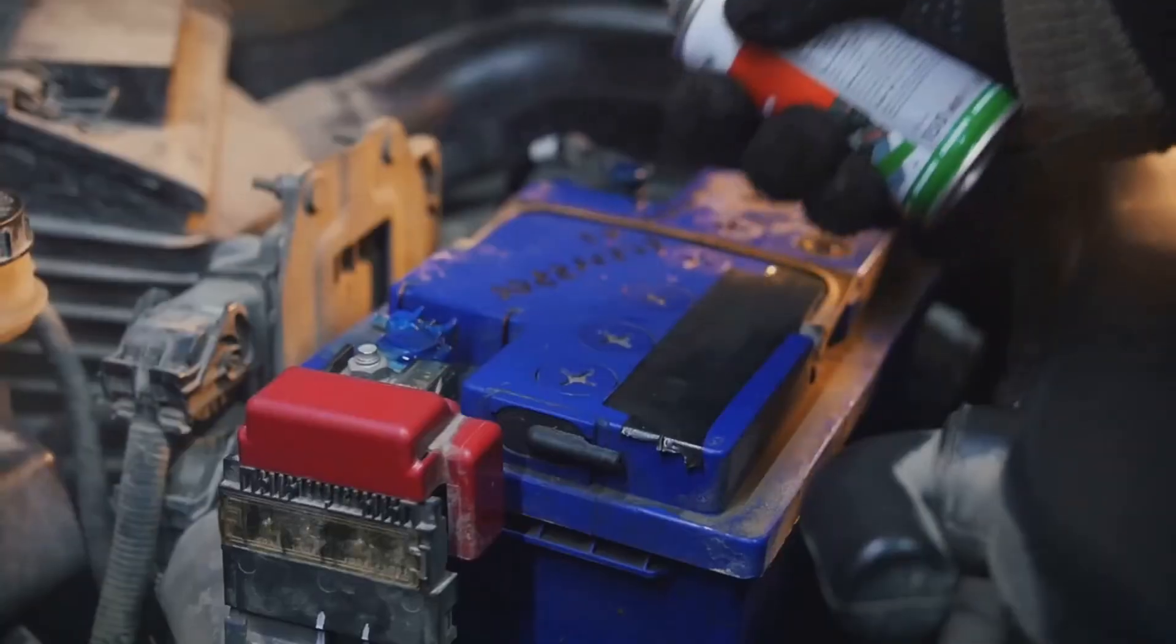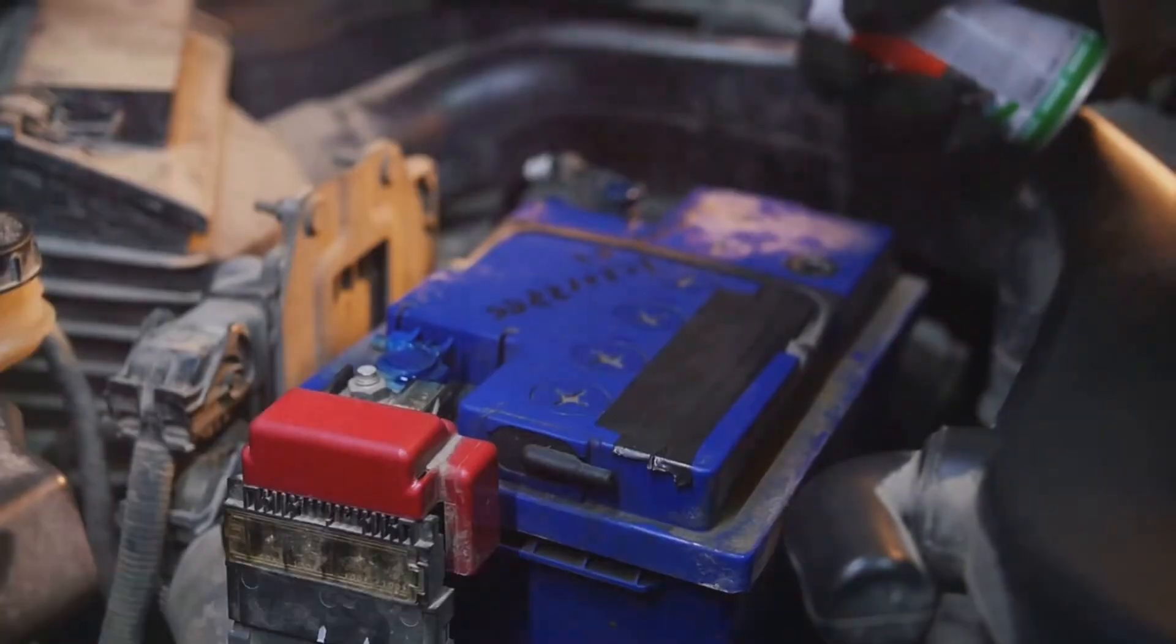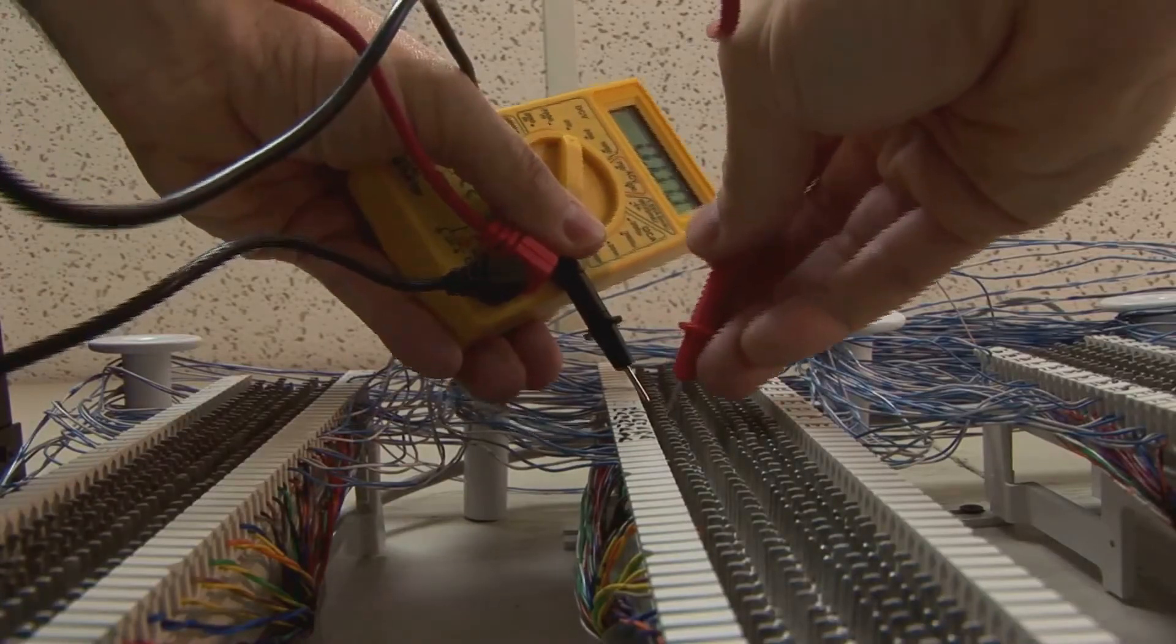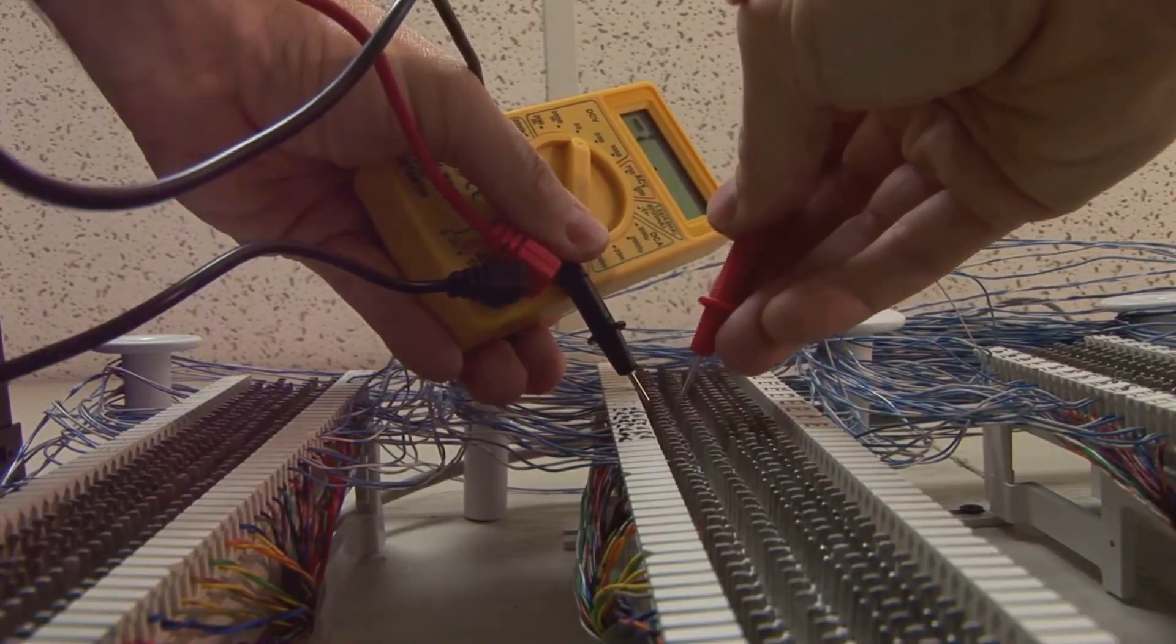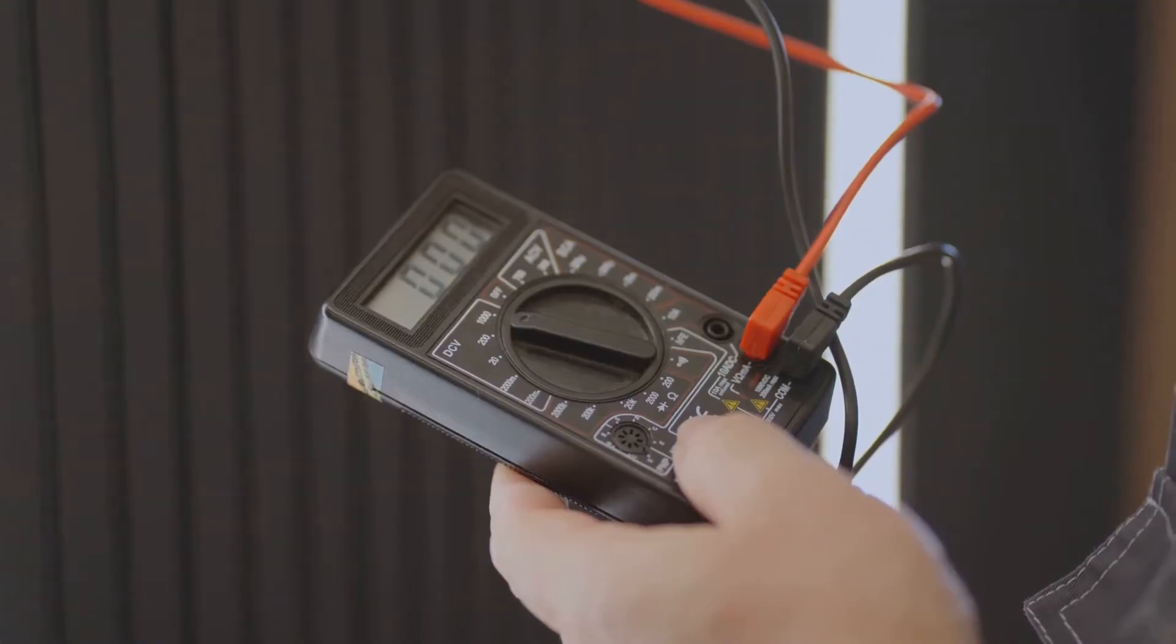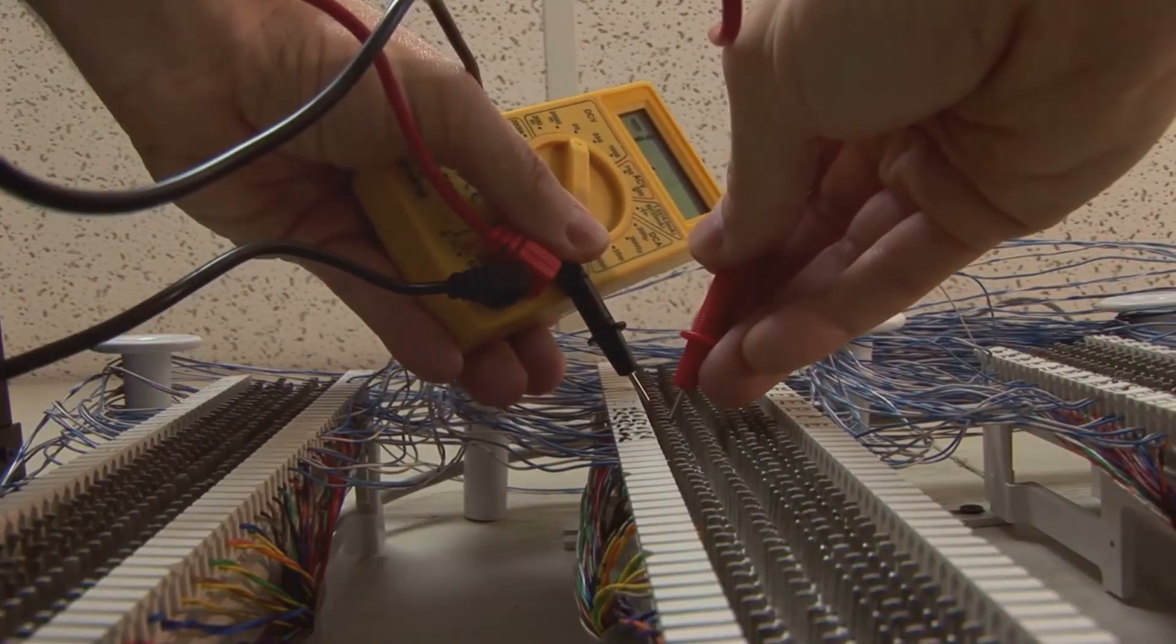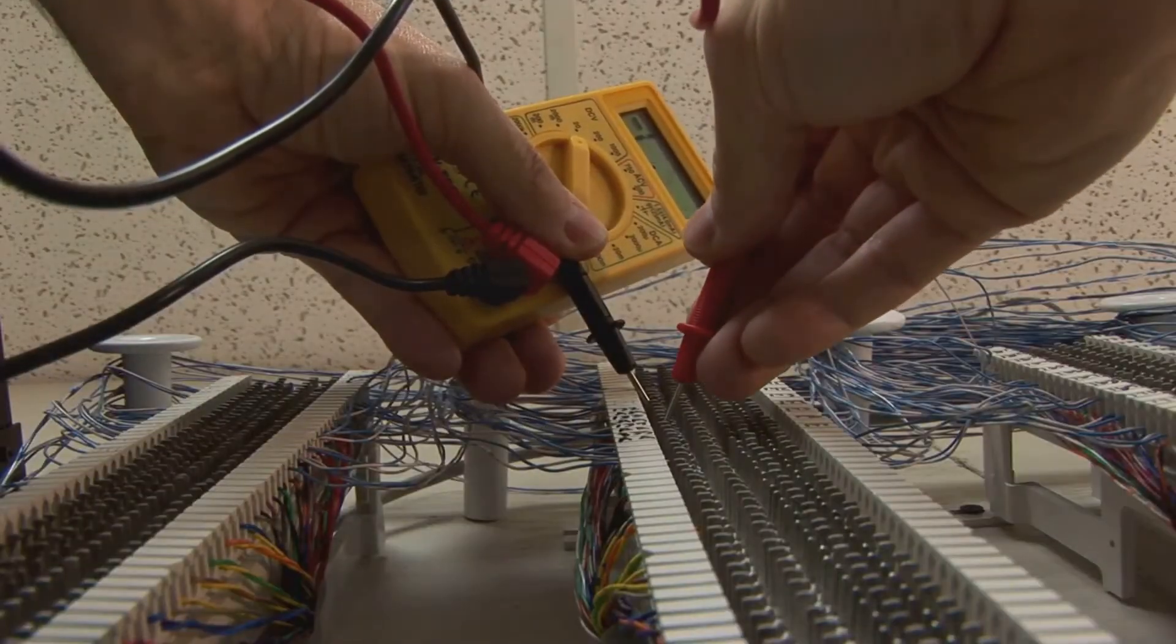Try cleaning the terminals with some sandpaper or electrical contact cleaner. Sometimes the problem isn't the coil itself, but the plunger sticking. Try gently tapping the solenoid while testing the resistance. If you see the reading change, the plunger might be the culprit. If none of these troubleshooting tips do the trick, it might be time to replace the solenoid.